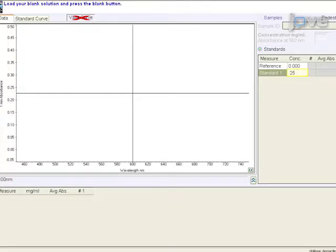Enter the values for each standard concentration in the right pane table. The software allows for the reference and up to 7 additional standards. The reference and or standards can be measured in replicates.